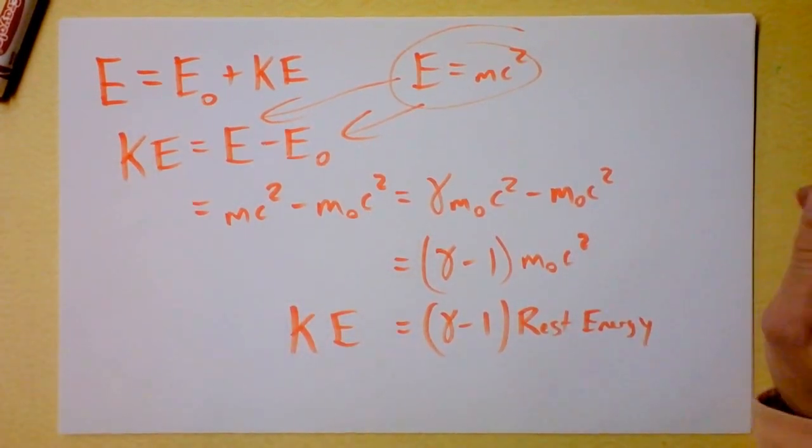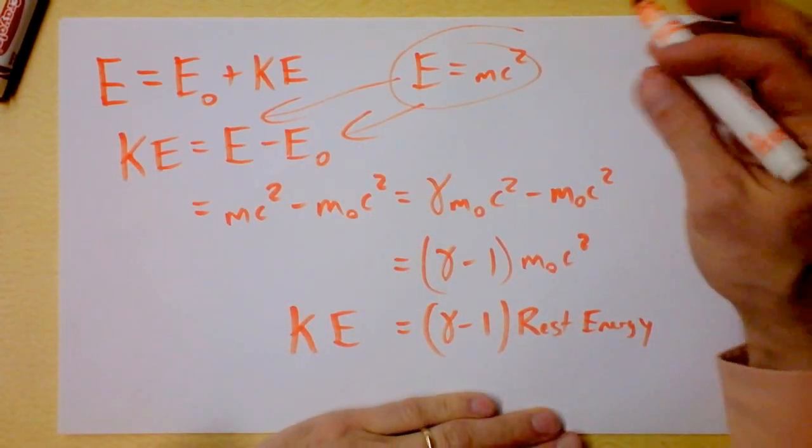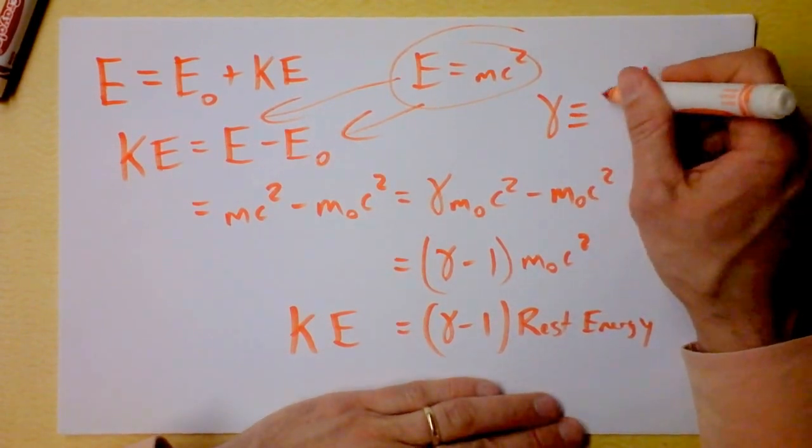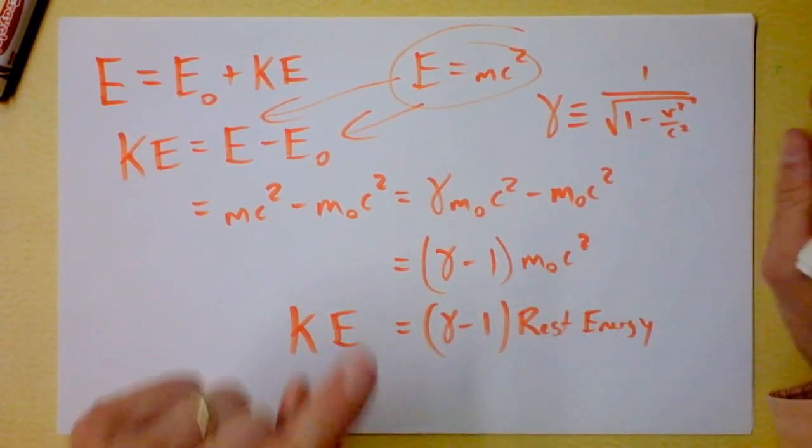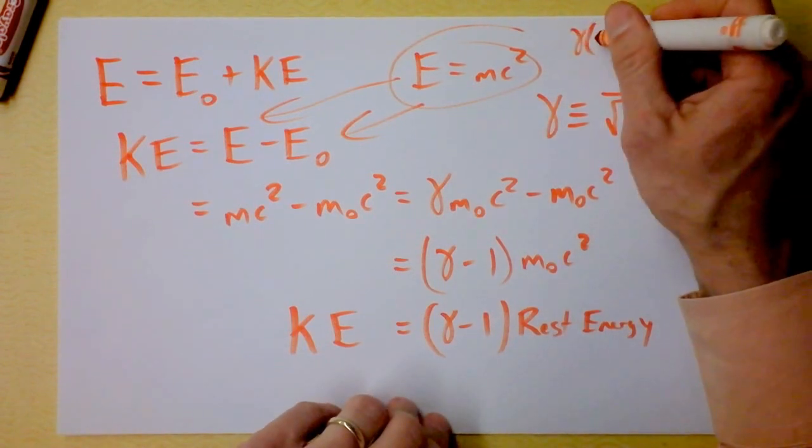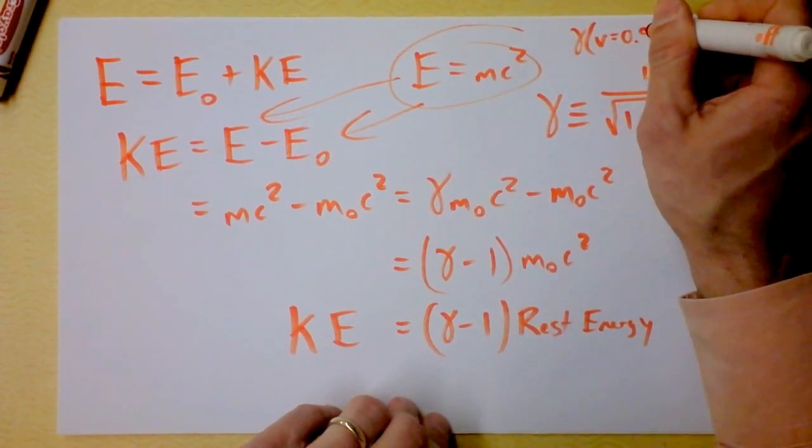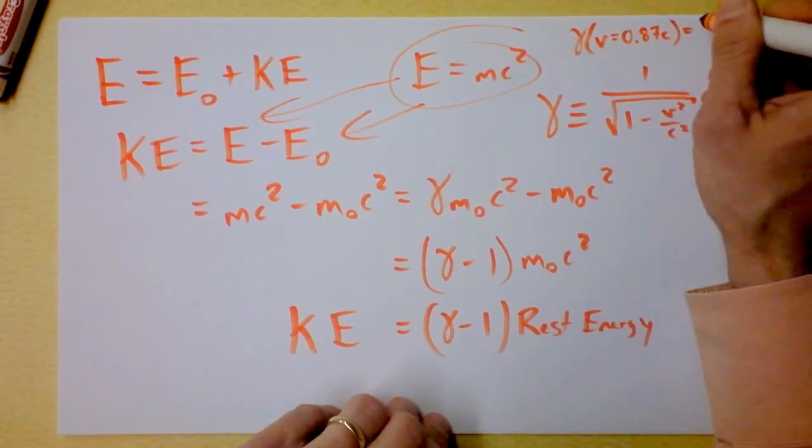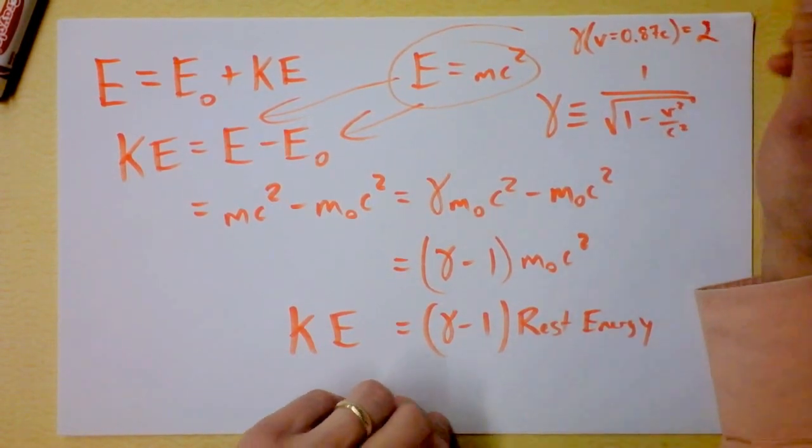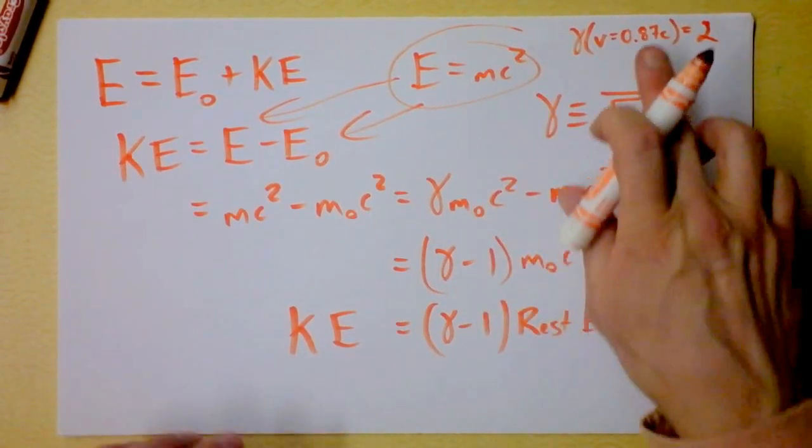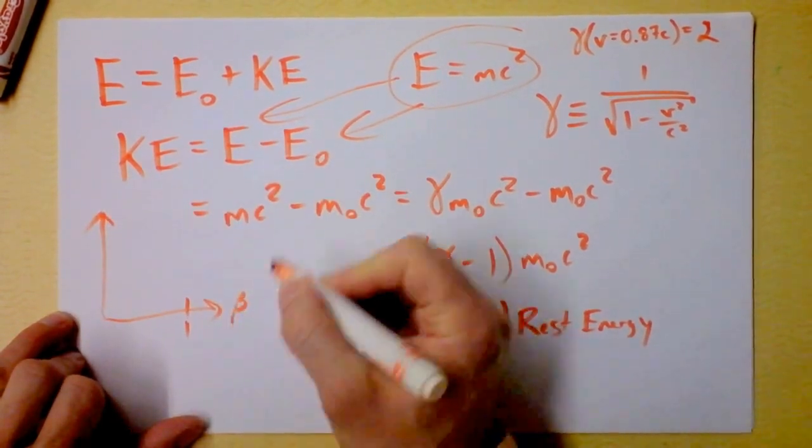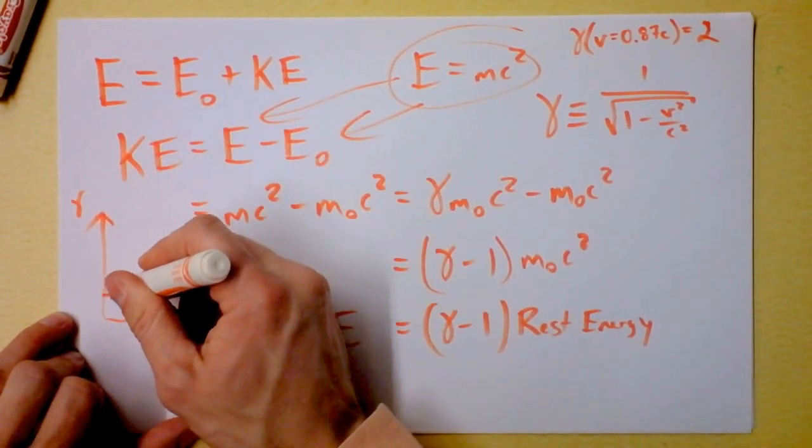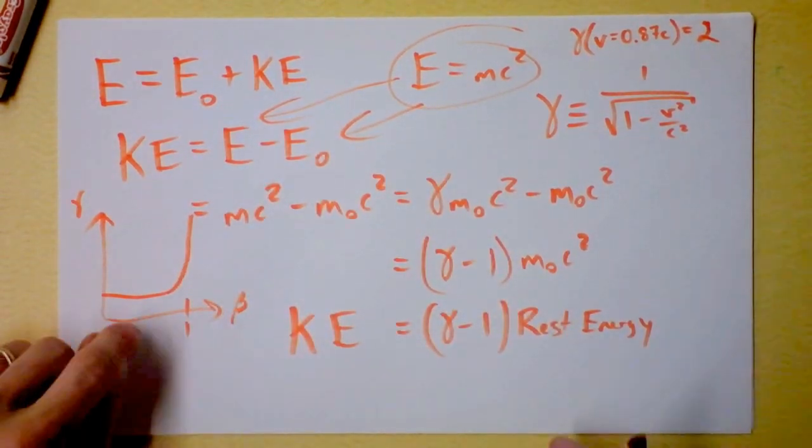Remember our gamma - gamma is so important. You need to know how this function works at various speeds. Please practice lots of gammas, get a feel for it. I like to say gamma of 0.87c is 2. Gamma of 14% the speed of light is 1.01. Gamma gets really awesome when velocity gets close to the speed of light. Gamma is 1, 1, 1, 1, 1, then woo! That might be exaggerated.